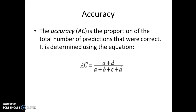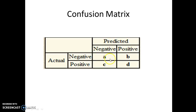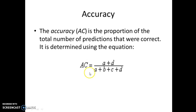The accuracy is the proportion of the total number of predictions that were correct. It is determined using the equation (A + D) / (A + B + C + D). Here A and D are the correctly classified instances over all predictions, which is why A plus B plus C plus D is the denominator for accuracy.